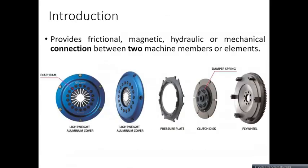Let us see what is the meaning of clutch, what is the purpose, and why you need to use the clutch. A clutch is a mechanical device or mechanical element which is used to make an engagement and disengagement to transmit the power or to transmit the torque between the driving shaft and the driven shaft.